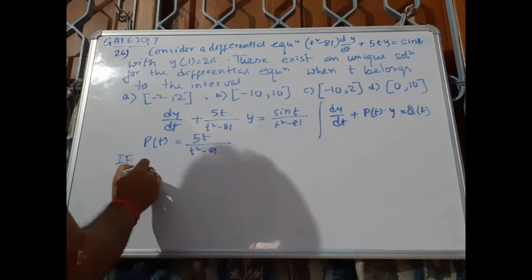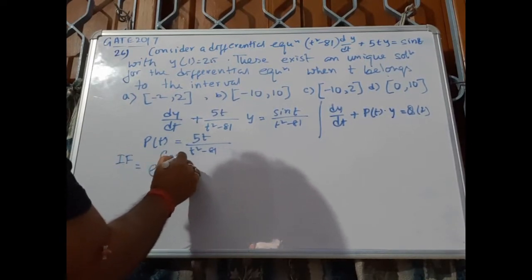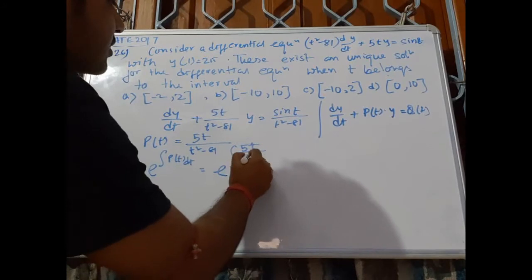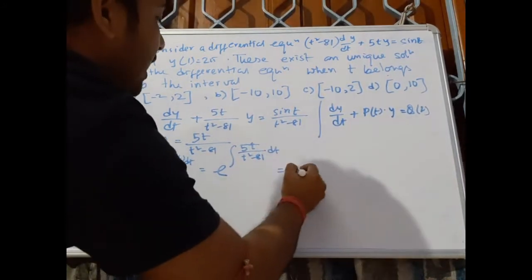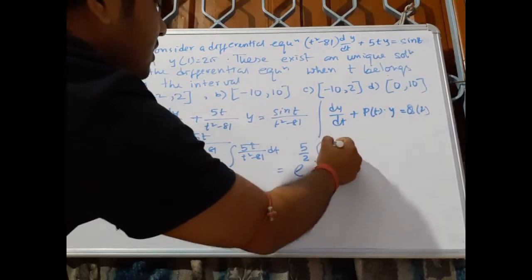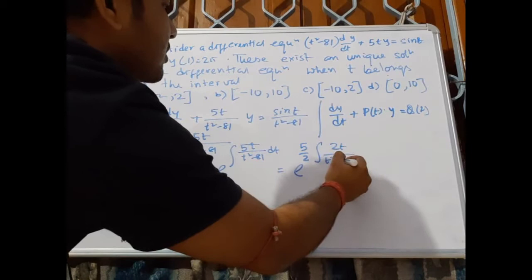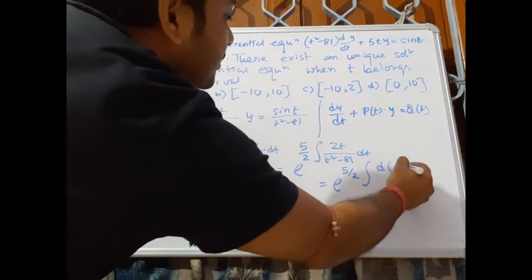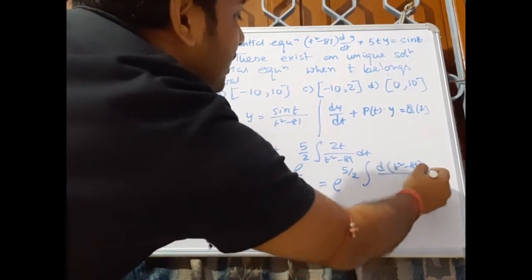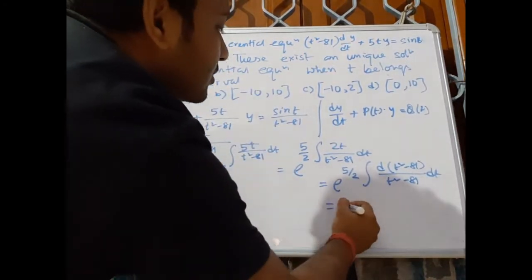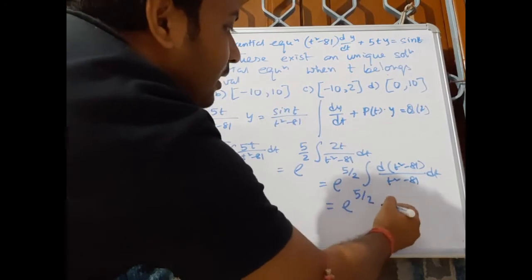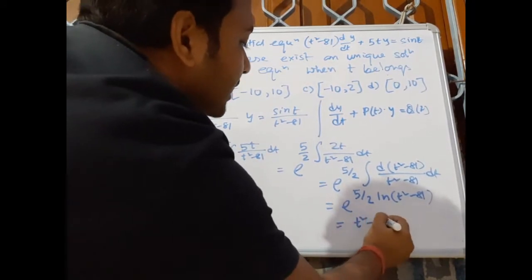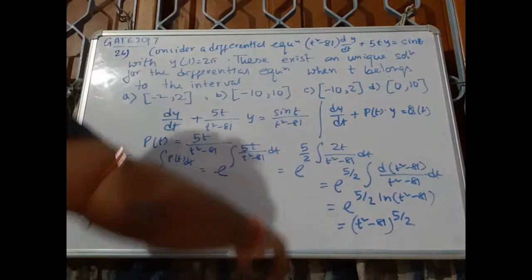Our integrating factor will be e to the power of the integral of P(t) dt, which is e to the power of the integral of 5t divided by (t squared minus 81) dt. We can write this as e to the power of 5/2 times the integral of d(t² - 81) divided by (t² - 81), which gives e to the power of (5/2)·ln(t² - 81). So the integrating factor is (t² - 81) to the power 5/2.